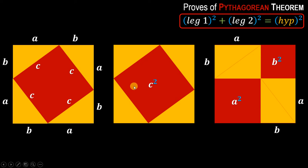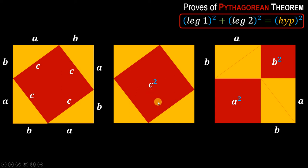The area in the first figure is c squared, where c is the hypotenuse. In the rearranged figure, the areas are a squared and b squared, which are the two legs of the triangle. Comparing the two figures, we can see that a squared plus b squared equals c squared — which is indeed the Pythagorean theorem. This concludes the second proof.